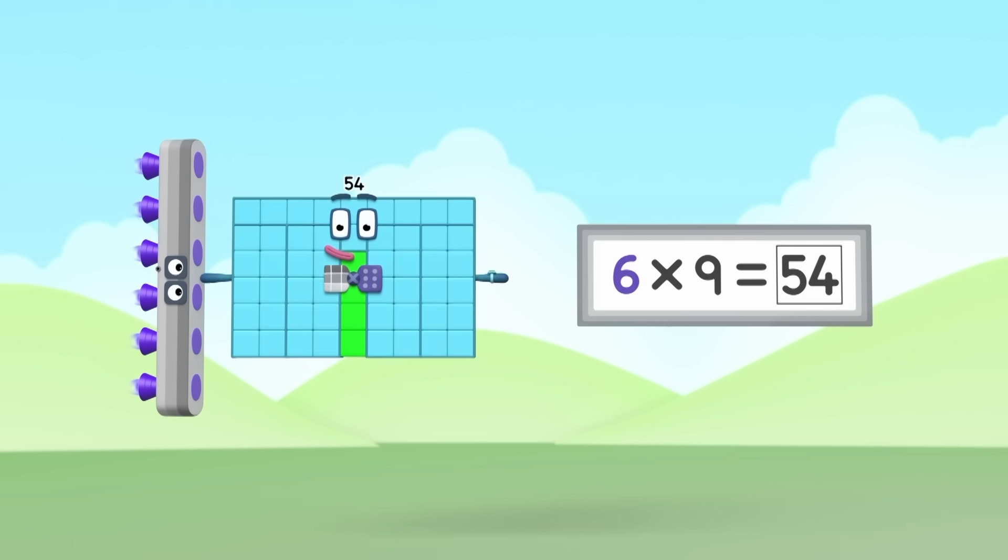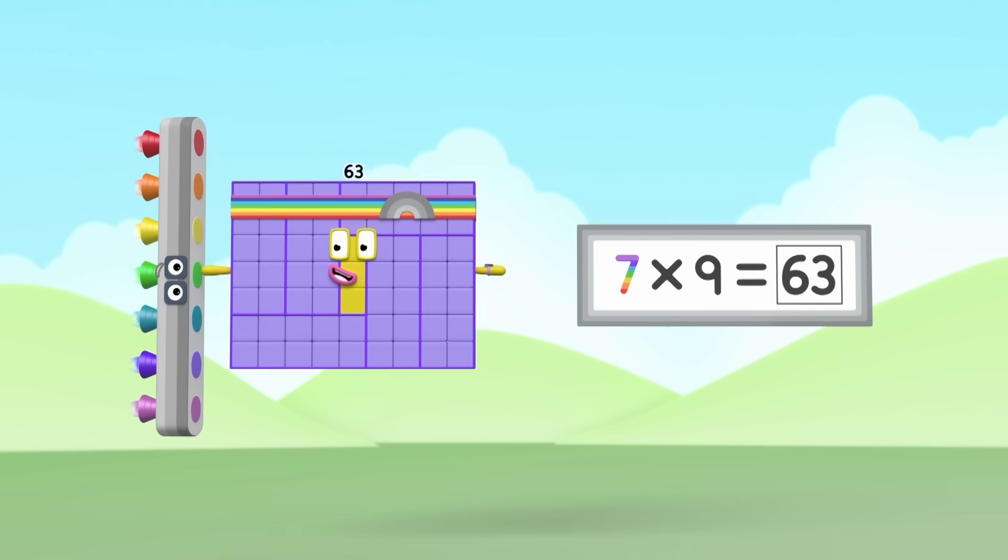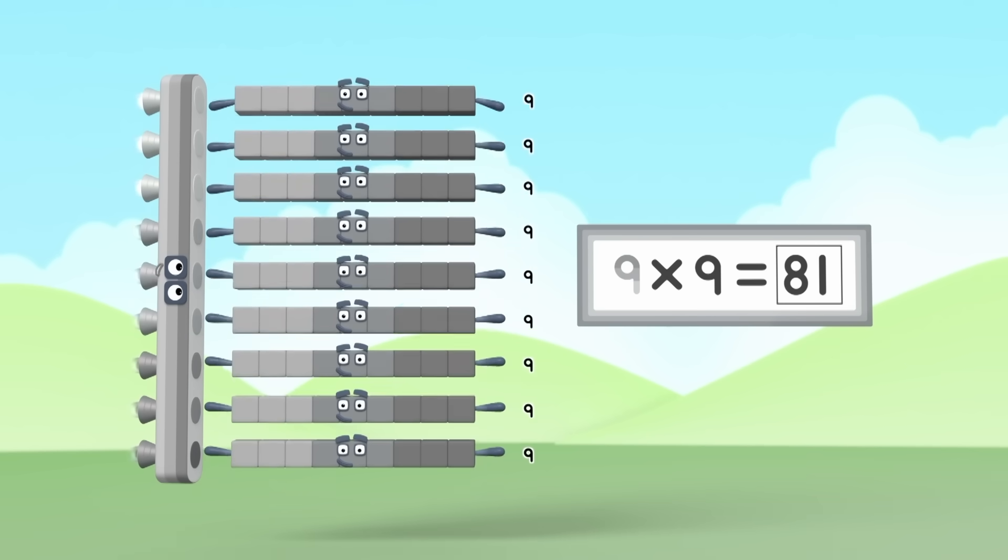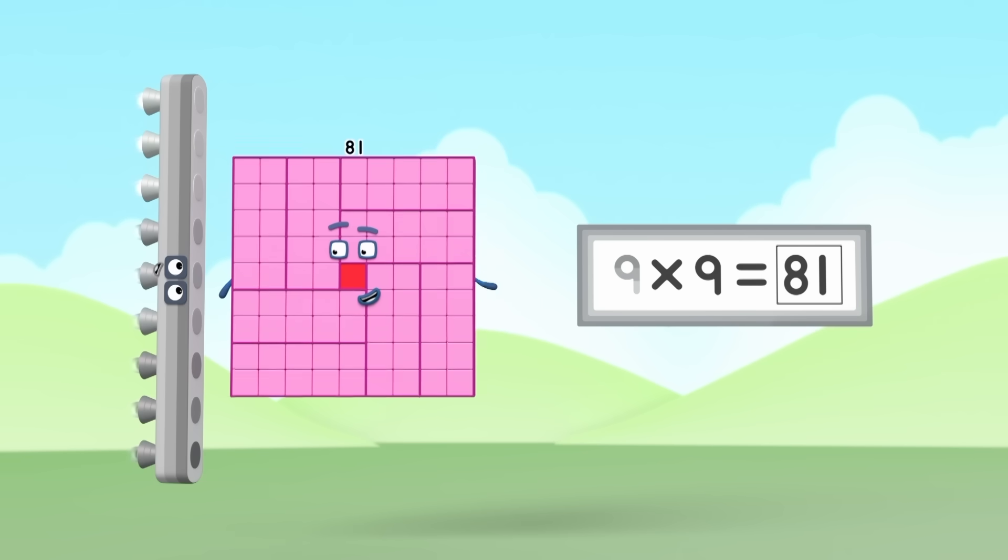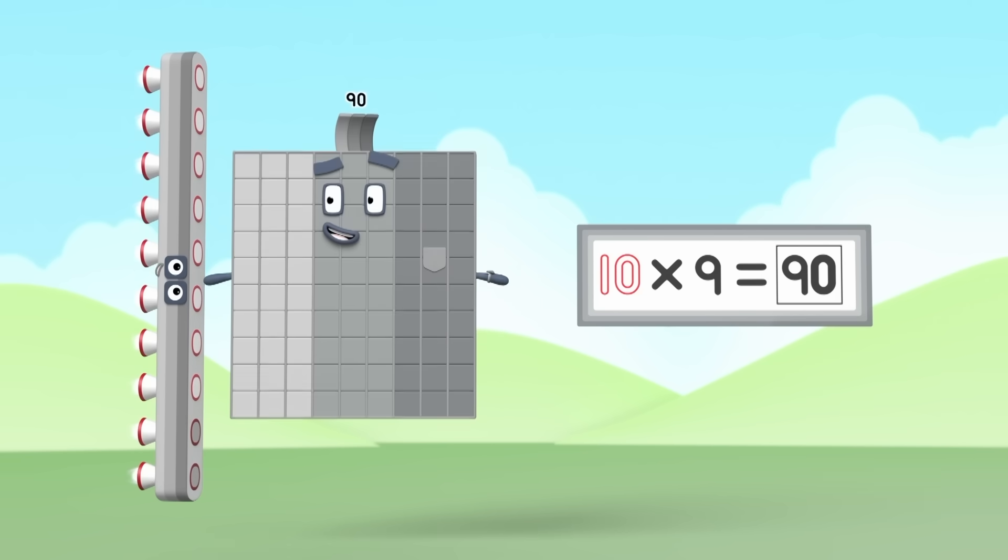6 times 9 is 54, 7 times 9 is 63, 8 times 9 is 72, 9 times 9 is 81, finally be the last in line, 10 times 9 is 90.